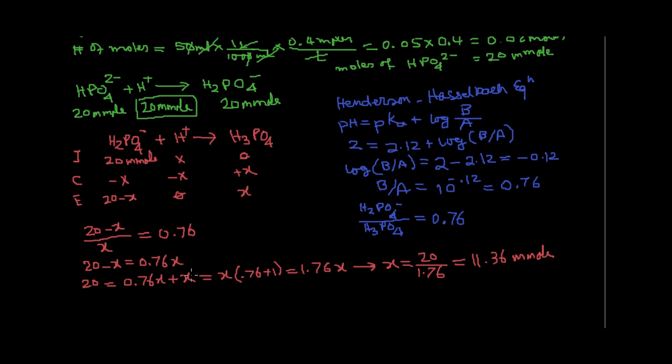This amount of acid is needed to convert part of this 20 millimole of H2PO4 minus to H3PO4. But initially, we have used 20 millimole of the acid to convert the HPO4 2 minus to this component. Total acid is then 20 millimoles from here and 11.36, which is 31.36 millimole of HCl.